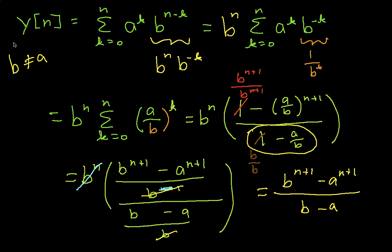So let's take this formula here and look at what happens when we have a equal to b. So we'll bring up a blank screen here. We have y of n is the summation, k going from 0 to n, of a to the n.